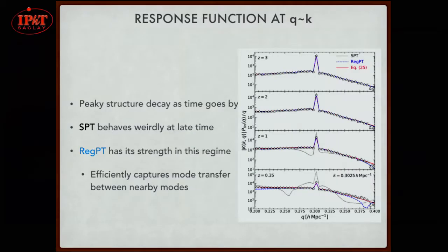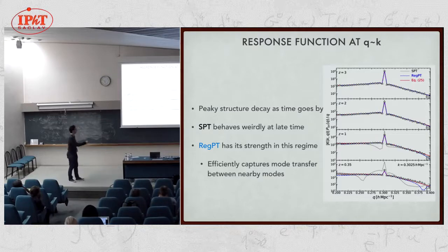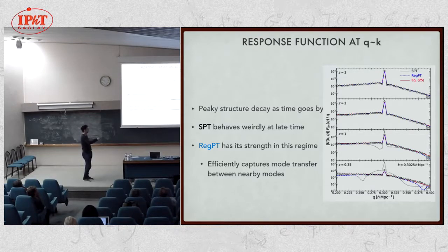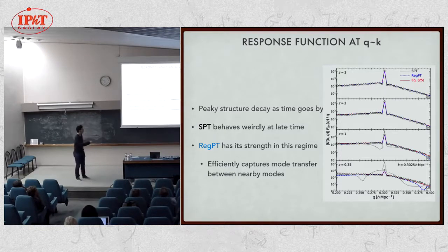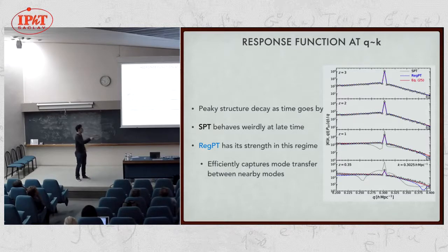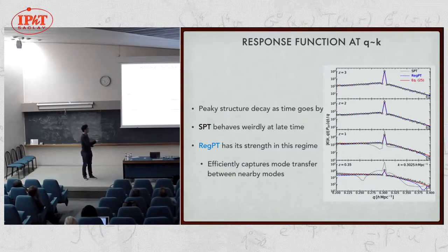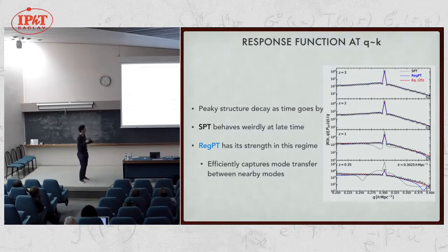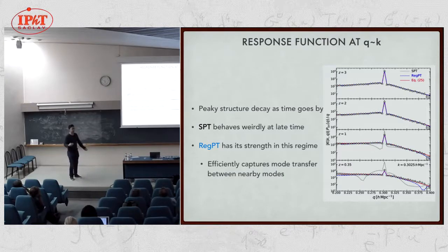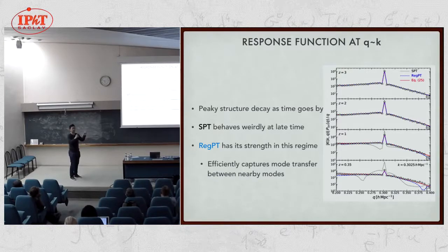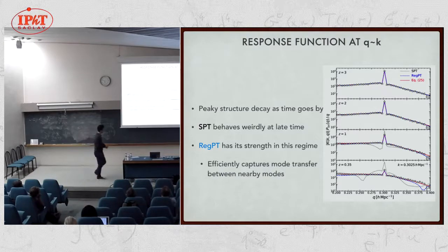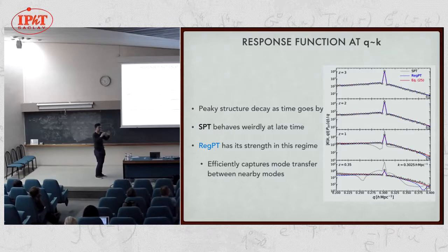However, if you apply some renormalization technique, the blue curve, this part is very different from simulation. In this respect, at least this kind of renormalization technique doesn't work in this region. Next, I show the response function around q equal k, nearby wave modes. Then, at low redshift, standard perturbation theory calculation behaves very weirdly. It has zero crossing or a huge amplitude around here and so on. If you look at the blue curve, it continues to behave very nicely all the way down to this redshift. This means that this particular type of renormalization technique helps you to calculate the mode transfer between similar scales.